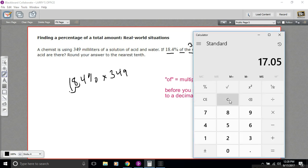I'm going to bring up our calculator here. I've got 18.4%. I'm going to divide that by 100 to convert it to a decimal. So that's 0.184, just what I got here.